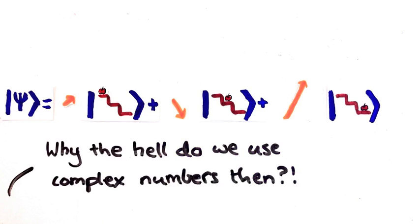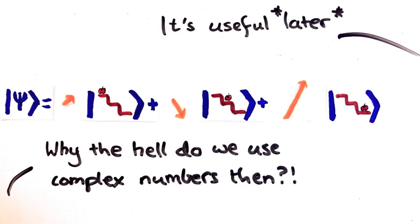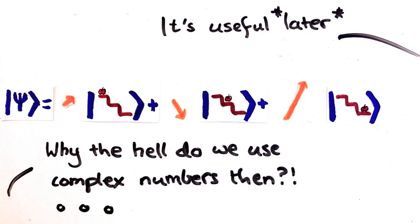You might be wondering then, what's the point of using complex numbers? Well it actually doesn't matter at all to the Born rule, but it really matters for what we're looking at in the next couple of videos. And so these two states are actually very different physically.